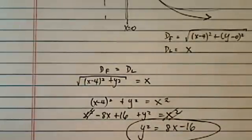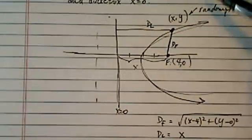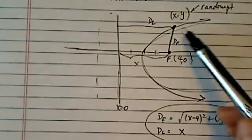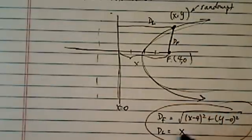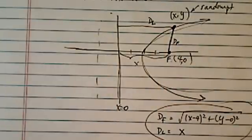Pretty easy and simple. Like I said, if it's not as simple as this one, again, use definition. Write the distance from the point, any point (x,y) to the focus, and then write the distance from the point to the directrix and set them equal. Then you're home free.